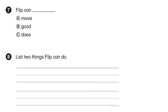Number 7. Flip can what? Is it A, move, or B, good, or C, does? Which one here makes sense? Of course, it is A, Flip can move.